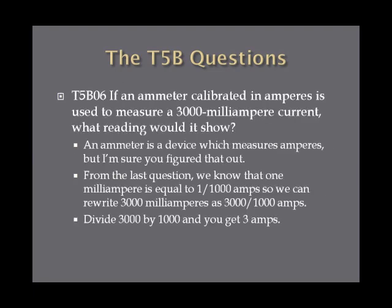If an ammeter calibrated in amperes is used to measure a 3,000 milliampere current, what reading would it show? An ammeter is a device that measures current. Since a milliampere is 1/1,000 of an ampere, there are 1,000 milliamperes in an amp. We rewrite 3,000 milliamperes as 3,000 over 1,000 amperes. Dividing 3,000 by 1,000 gives 3 amperes — that's the answer.